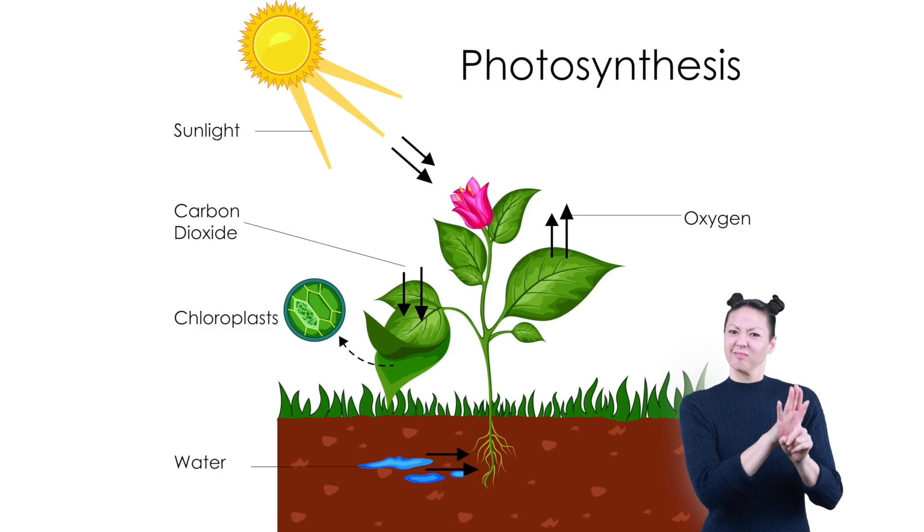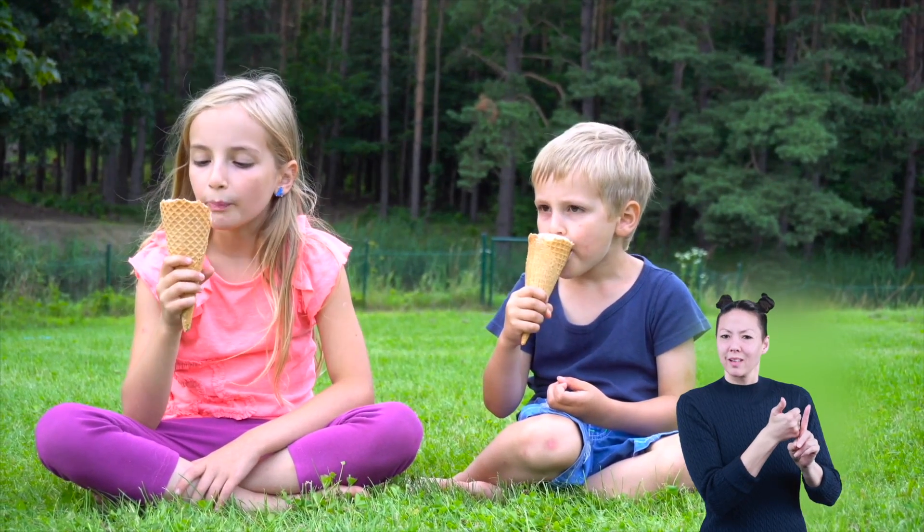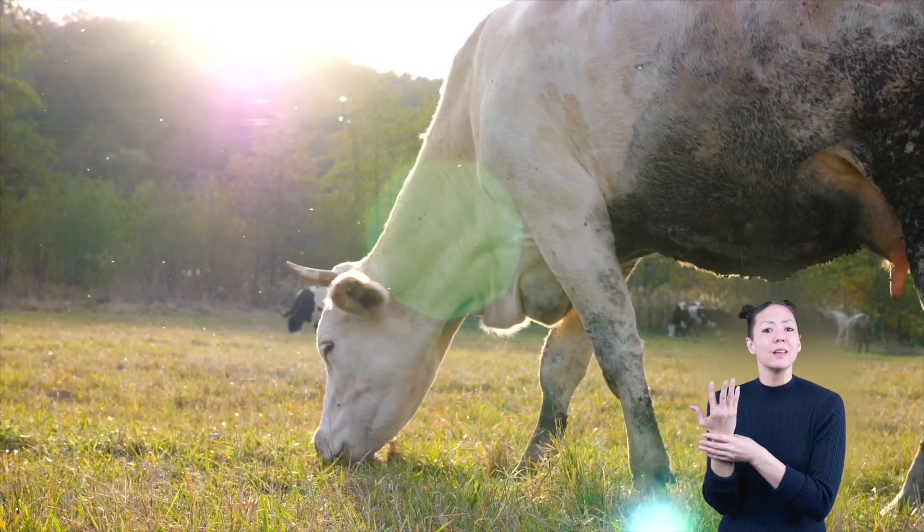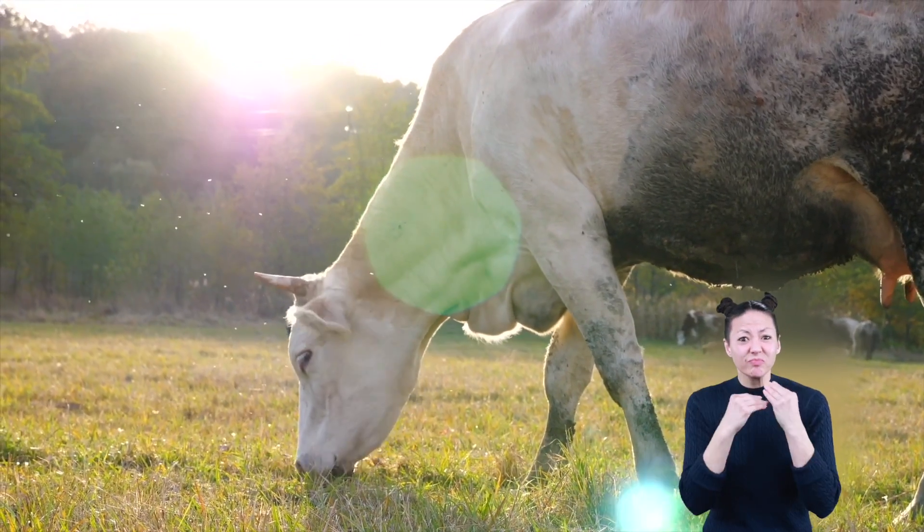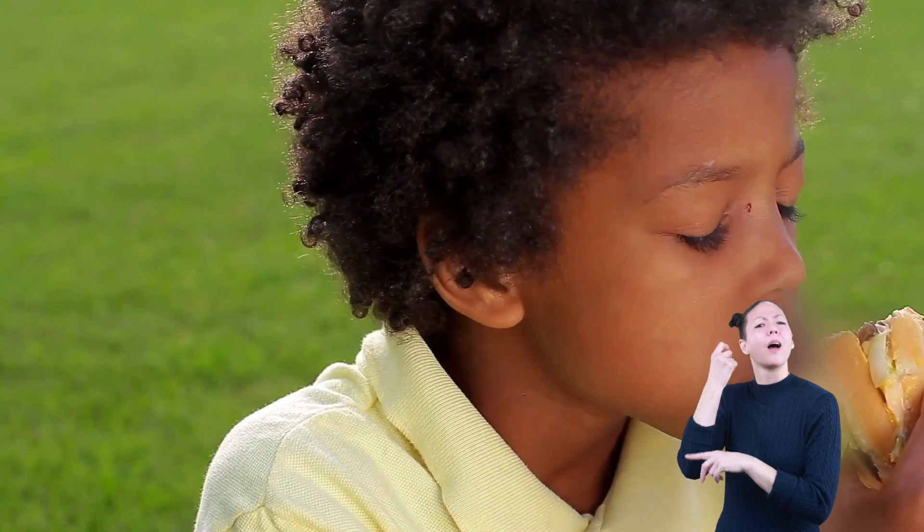A cool thing about plants is that everything we eat is either from a plant or from something that ate plants. If you eat a hamburger, the meat comes from a cow which feeds off plants.